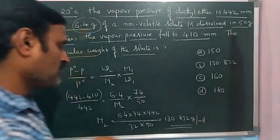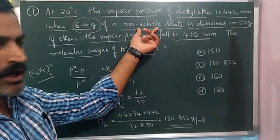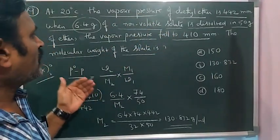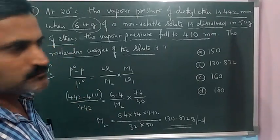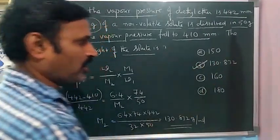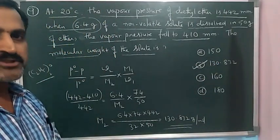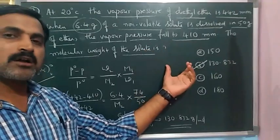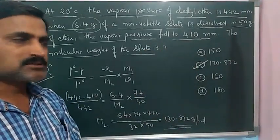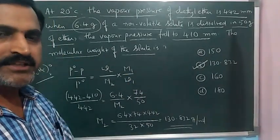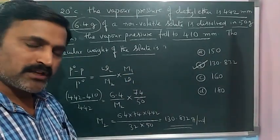That is what we call the molar mass of this non-volatile solute present in the diethyl ether. So 130.832 we have, we got the exact answer. Second option is the right option for this question on Raoult's Law from solution chapter. This is exercise number 2 from IL series. Thank you very much.